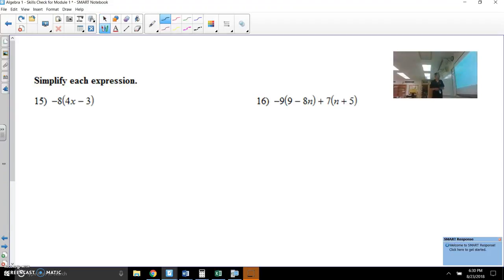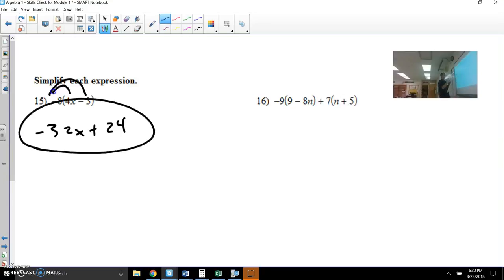Let's start with number 15. We've got distribution. Negative 8 needs to multiply by 4 to give you negative 32x. Let's multiply negative times a negative to get positive 24. I want to make sure everybody understands how this works first because it's key to understanding how distribution works as well as how combining like terms works.